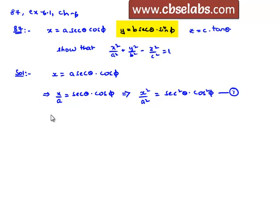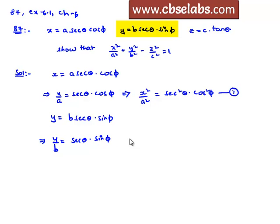Let us consider the second equation: y is equal to b secant theta into sin phi, which implies y by b is equal to secant theta into sin phi. Squaring on both sides gives y square by b square is equal to secant square theta into sin square phi. Let it be equation number 2.